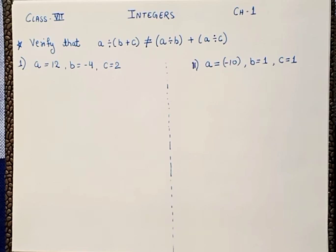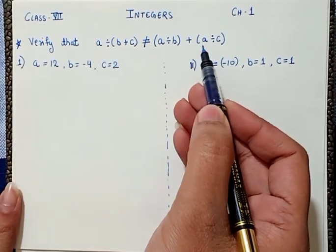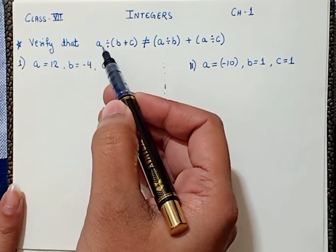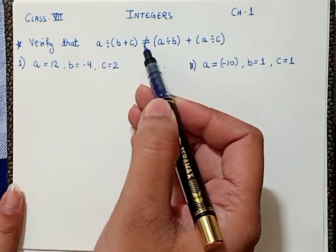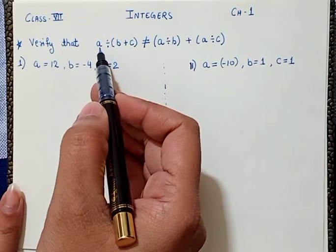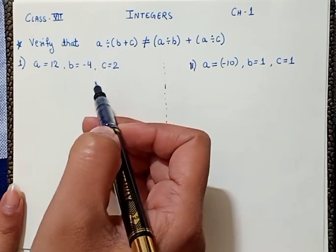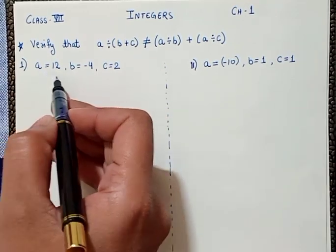Let's look at the first question. We have to verify this equation: a÷(b+c) equals or not equals (a÷b)+(a÷c). If we observe, it is basically the distributive property. Let's prove this with some values of a, b, and c. We will take the LHS first.